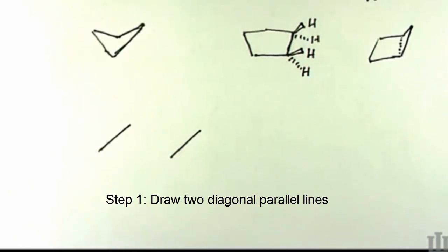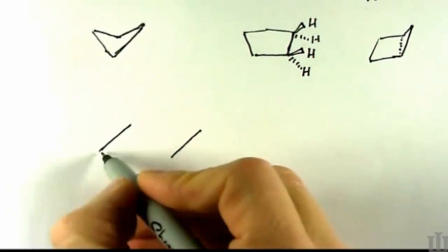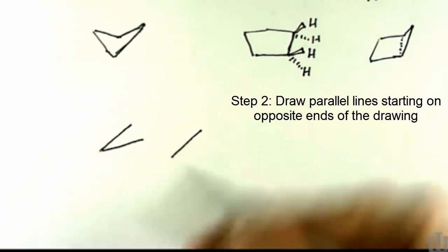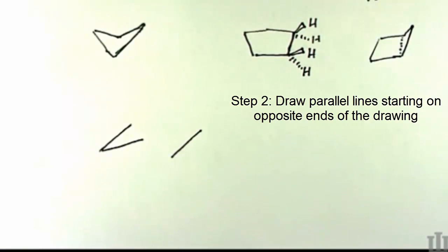Draw two diagonal lines that are parallel to one another, and then go to opposite corners, either the up or down opposing corners. Let's say we start at the lower left corner, we draw a line up.